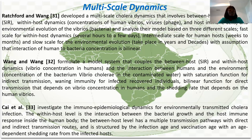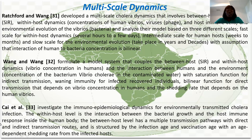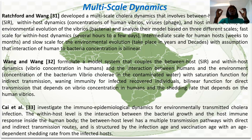Reference 33 similarly considered within-host and between-host dynamics with host immune response within the human body. One key feature of that work by Kai is that they considered infection rates, vaccination rates, and the shedding rate into the environment. The shedding rate was age-dependent — they examined whether the shedding rate differs between young persons and adults.